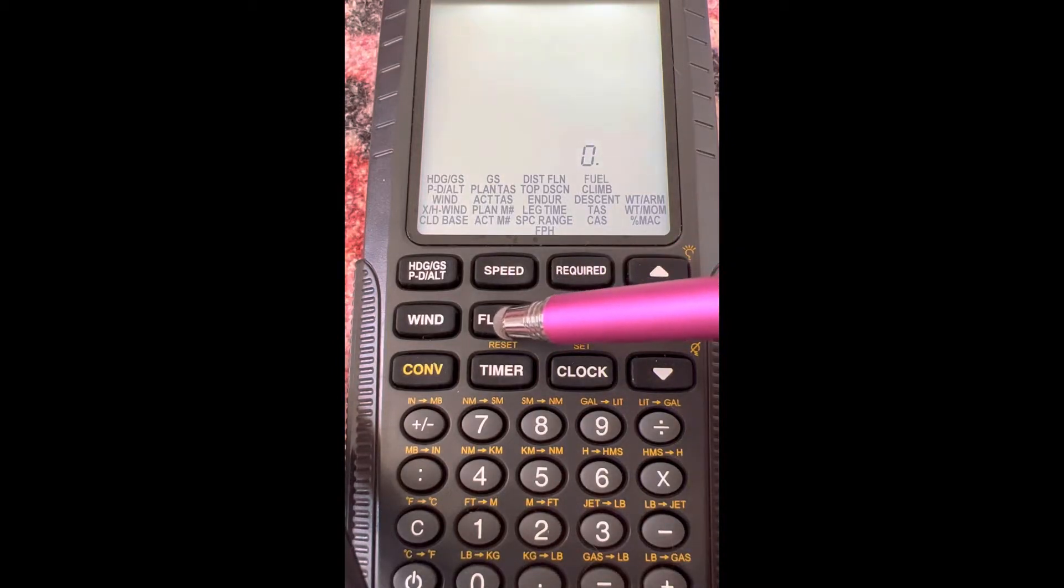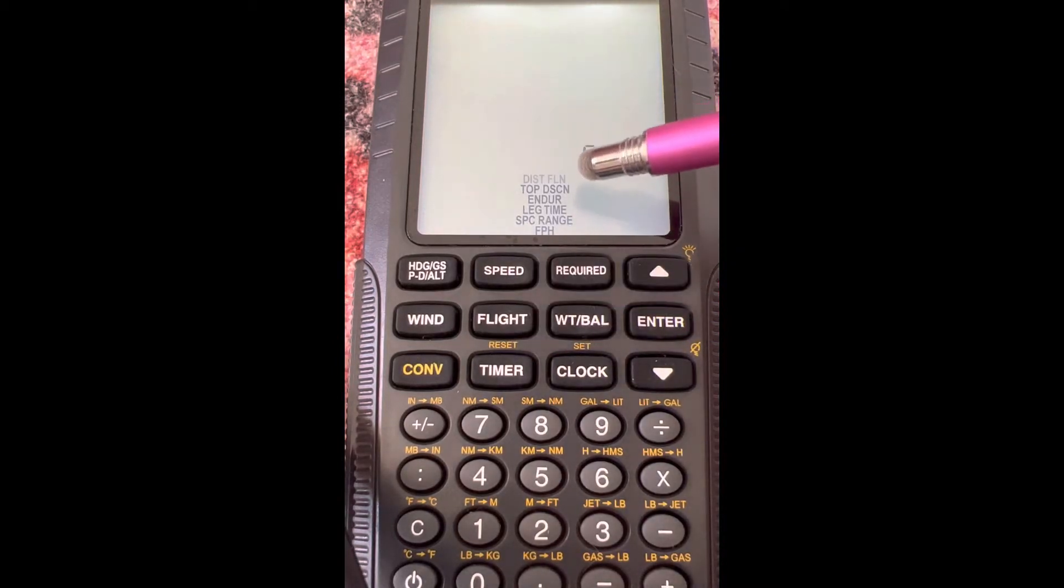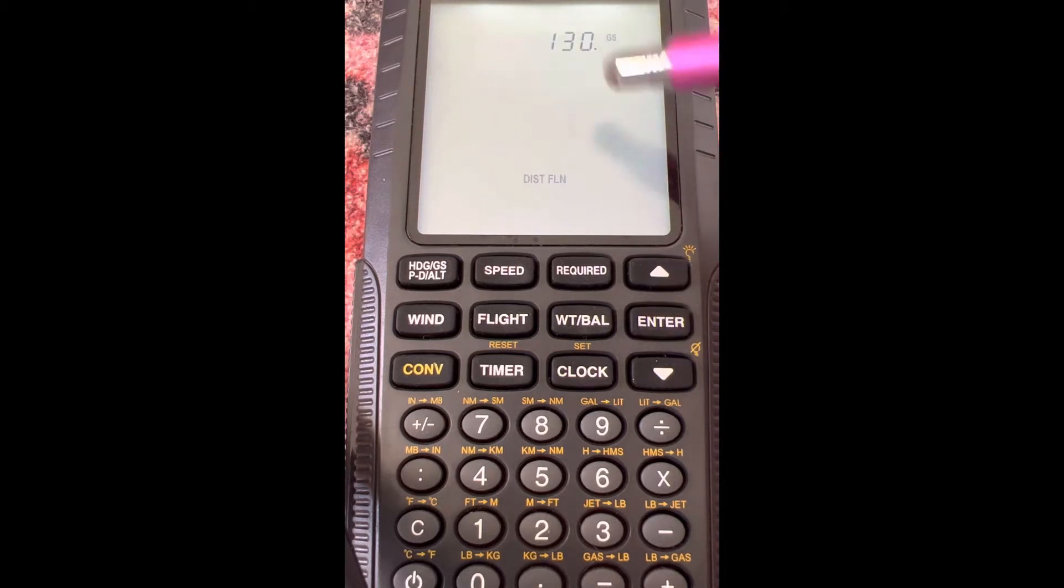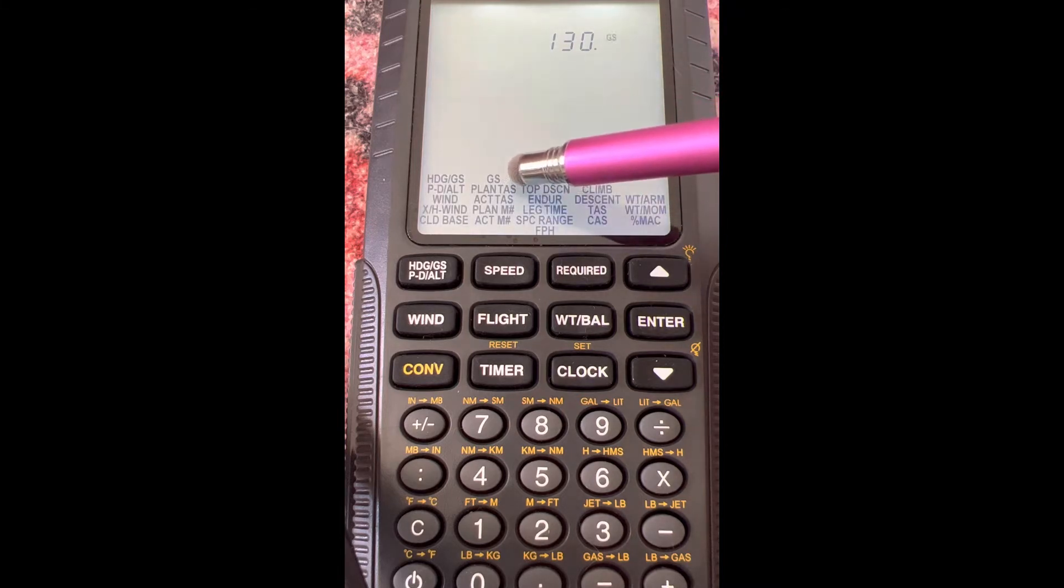Okay guys, we're going to use the flight menu button and we're going to do this first one, distance flown. This function is just a simple ground speed, time, distance equation where we need ground speed and time to get distance.